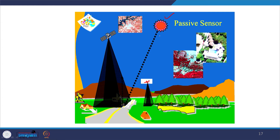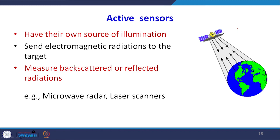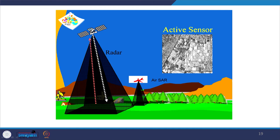In the passive sensor example, sunlight falls on the earth surface and the satellite captures that illumination to produce images. For active sensors with their own source of illumination, images can be taken at any time of day. Active sensors measure back-scattered or reflected radiations from the object, with examples including microwave radar, laser scanners, and a camera with a flash gun. The radar sends illuminating radiation to the object, captures the reflected radiation, and produces a characteristic image.